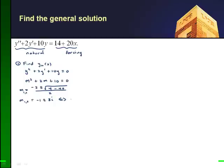I recognize that this is case 3. And if I compare to alpha plus beta i, I know the solution for the homogeneous part is going to look like e to the alpha x, e to the negative x, times c1 cosine beta x plus c2 sine beta x.